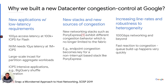So why did we build a new data center congestion control at Google? I would like to highlight three key reasons. We have new applications with low latency requirements. Flash needs 100 microseconds of access latency at 100k plus IOPS, and we have needs of 10 microseconds of access latency at 1 million plus IOPS. We also have large-scale incast typical of partition-aggregate workloads and IOPS-intensive applications like BigQuery shuffle.